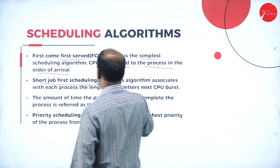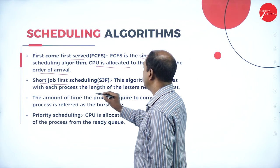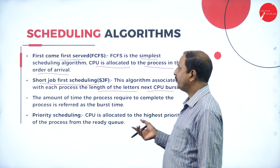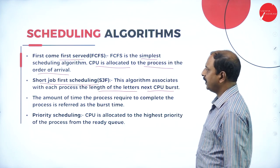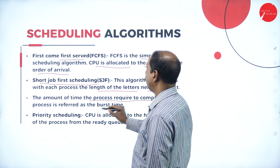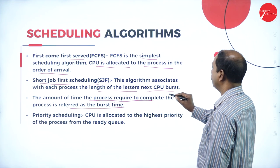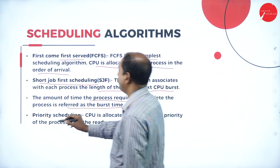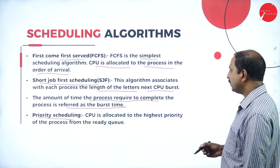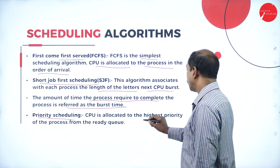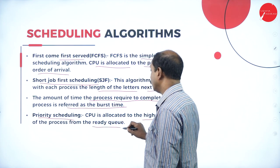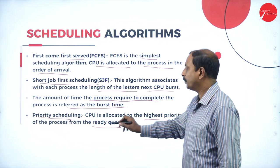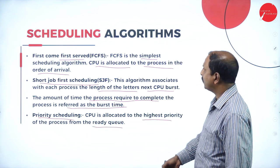The second scheduling algorithm is shortest job first. It associates with each process the length of its next CPU burst — the process which takes the least time for execution is given priority. The amount of time a process requires to complete is referred to as burst time. Next is priority scheduling: CPU time is allocated to the highest priority process from the ready queue.